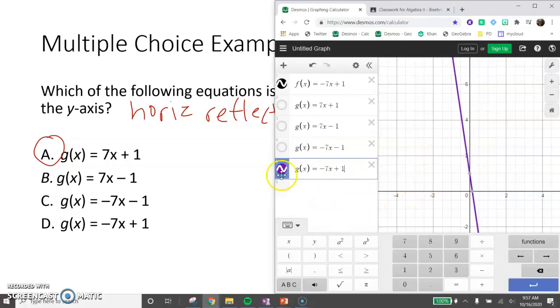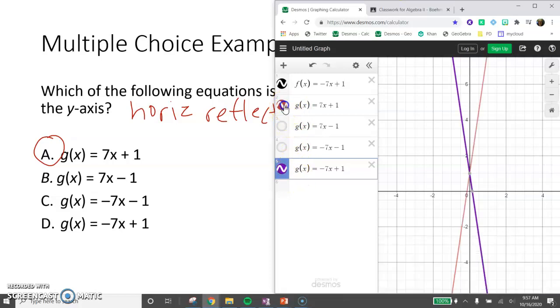But we can see here that by trying all of those possibilities in Desmos, it's a way of kind of narrowing your answers down and confirming that multiplying the inside, the x by a negative 1, does give us the horizontal reflection about the y-axis that we wanted. So a, g of x equals 7x plus 1 is the correct answer.